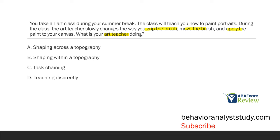When we are slowly changing someone's response through approximations, what do we call that? Shaping. The art teacher is shaping your behavior. You're going to grip the brush differently — better. You're going to move the brush differently — better. And you're going to apply the paint differently — better. So we are shaping. We know that.